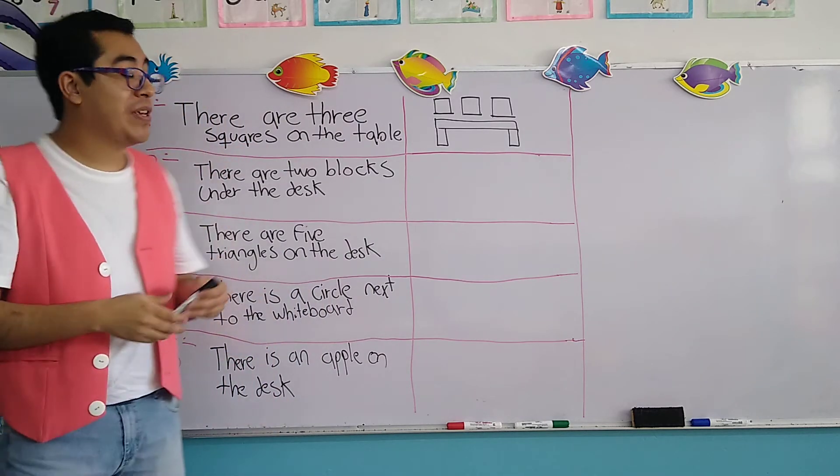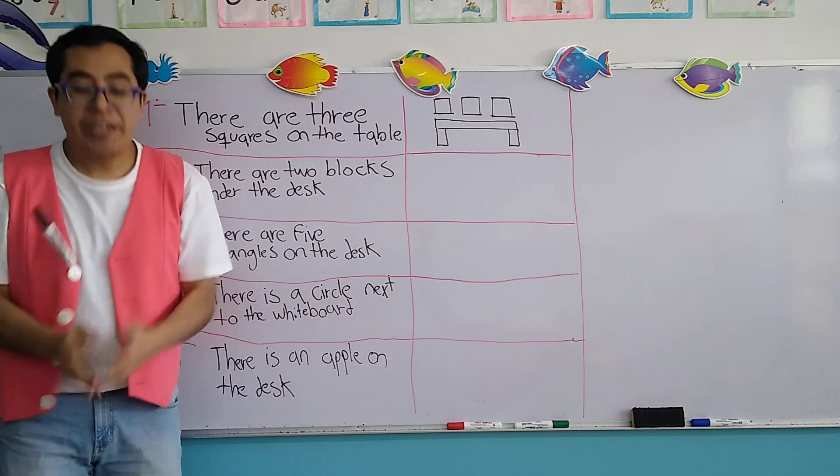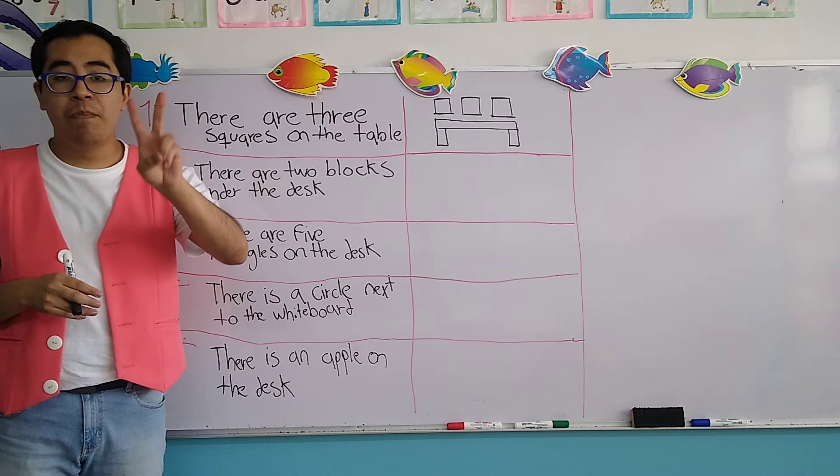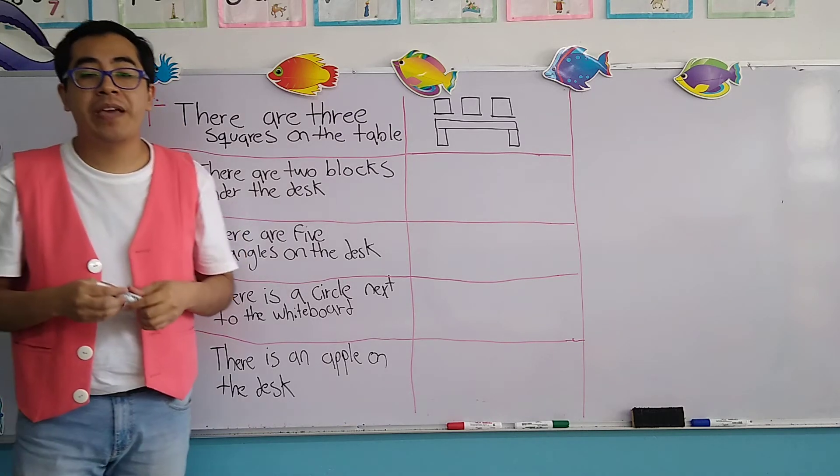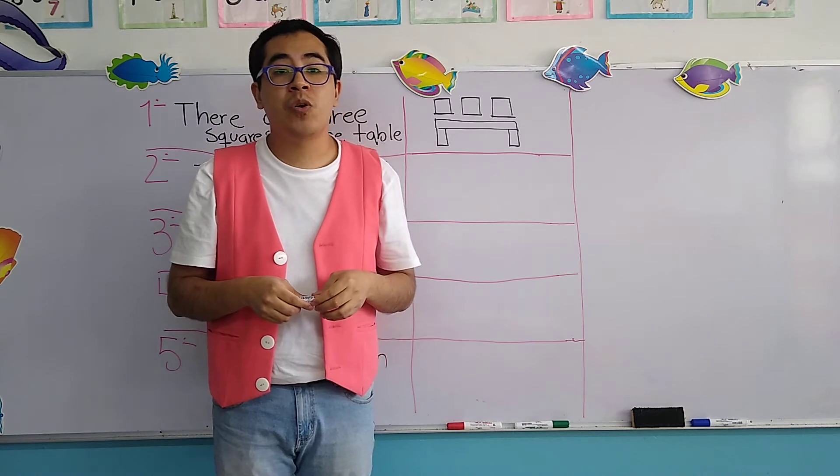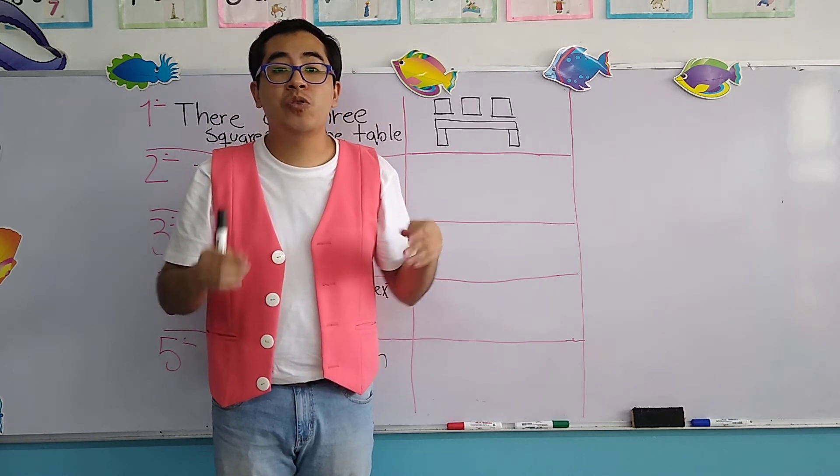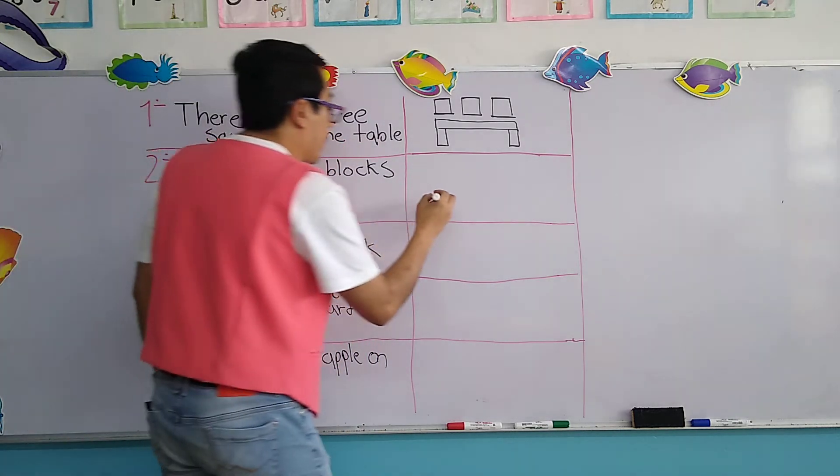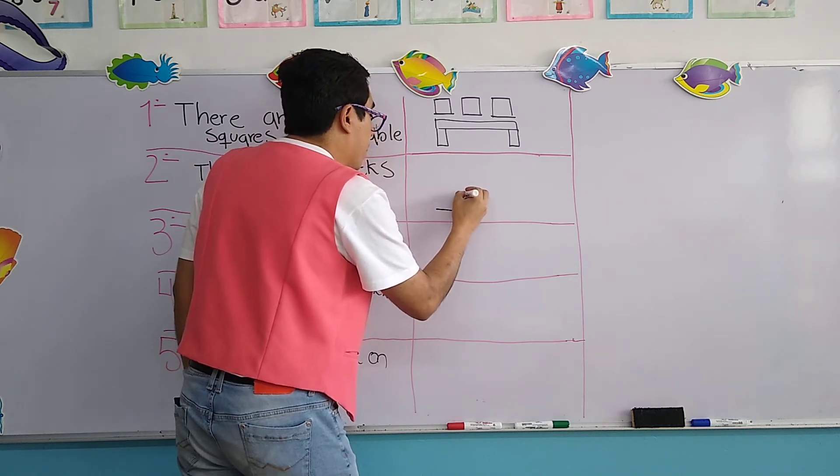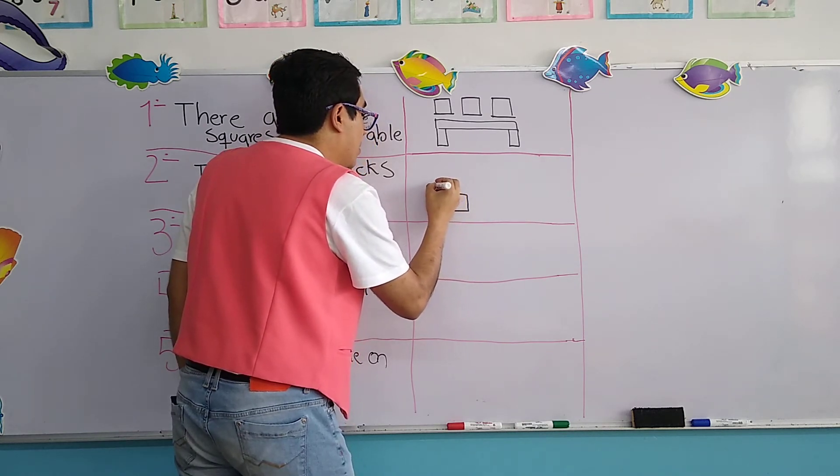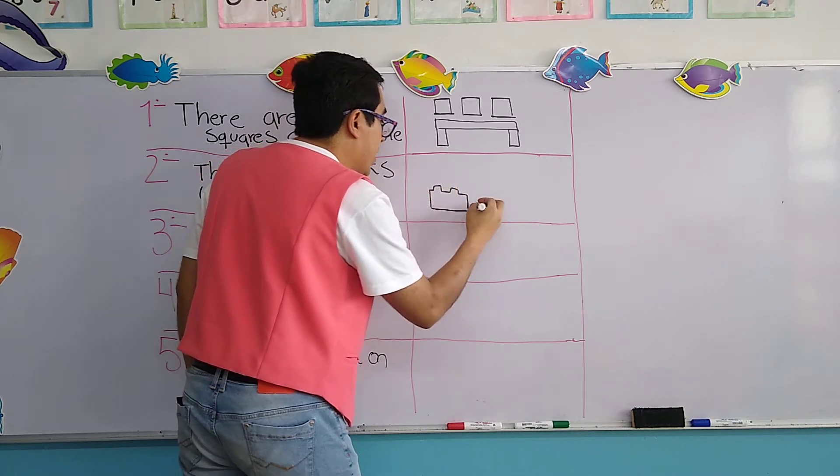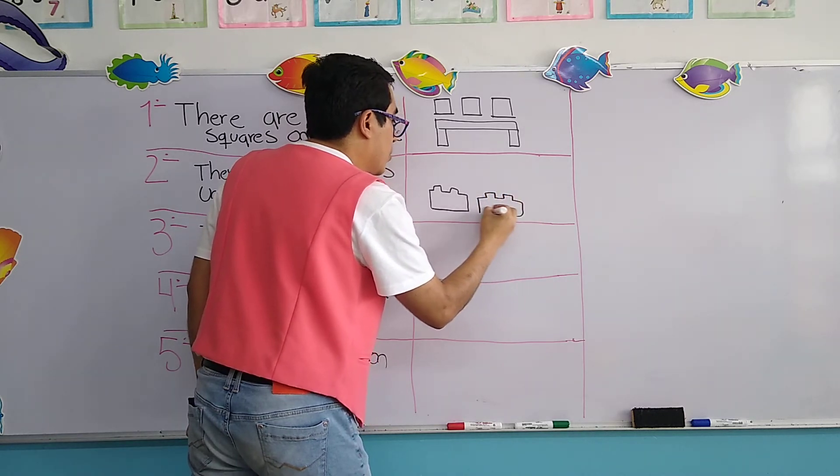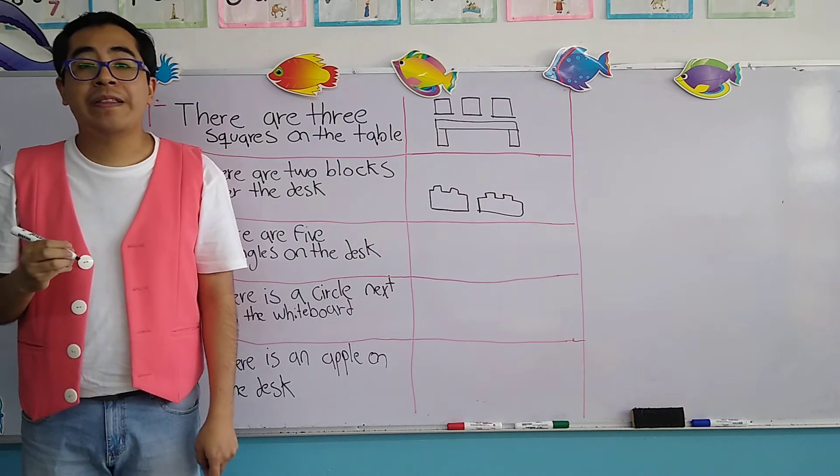For the second sentence, it says, there are. Remember, there is and there are means hay. There are two blocks under the desk. Now, remember, the blocks are the toys, like the Lego toys that we use to construct objects. So, there are two blocks.